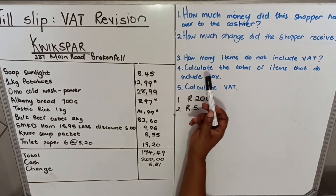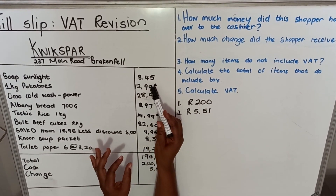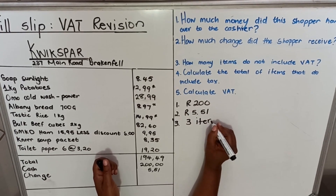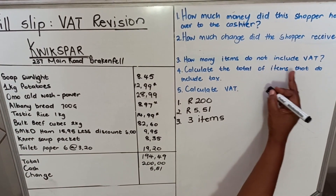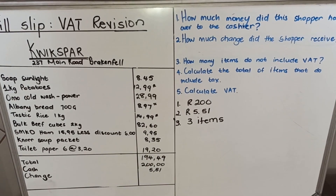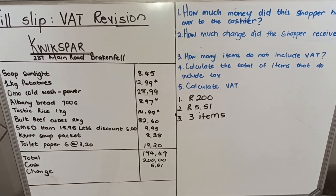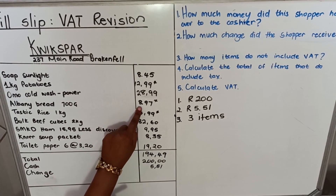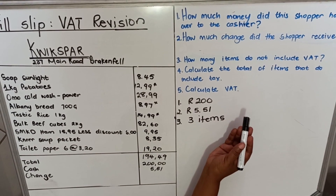The third question asks how many items do not include VAT — those are the basic food items. It's one, two, three, so the correct answer is three items. These three items do not include VAT, meaning they did not charge you VAT. VAT stands for Value Added Tax. When you go to the shop, the price you see on an item already has tax added. On these basic food items they don't add VAT to make them cheaper so that people can afford them.